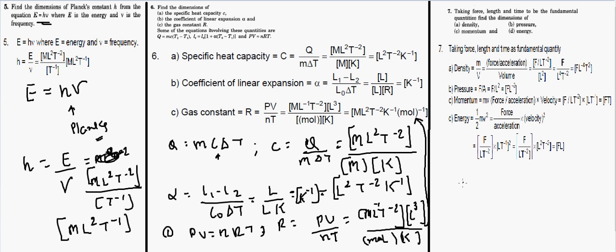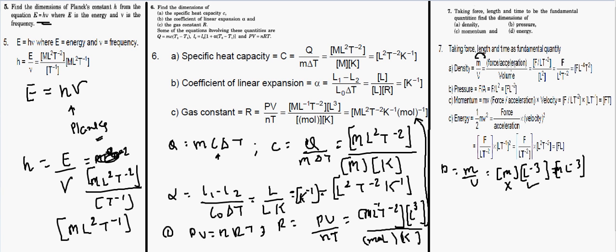For density, the formula is mass/volume, giving dimension ML⁻³. But since this question requires only force, length, and time, we replace mass using F = ma, so M = F/a = F/(LT⁻²). With volume as L³, the dimension of density becomes FL⁻⁴T².